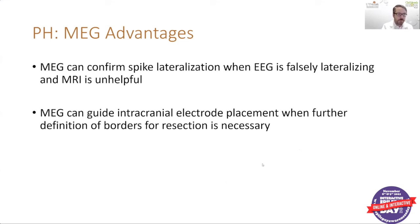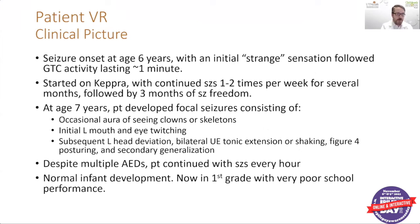Our second case is patient VR, who had seizure onset at six years of age, described as an initial strange sensation followed by generalized tonic-clonic activity, usually around one minute in duration. She was started on Keppra but continued to have one to two seizures per week for several months. Later, at age seven, she began having focal seizures with an aura of seeing clowns or skeletons, then left mouth and eye twitching, left head deviation, bilateral arm tonic extension, figure-4 posturing, and then generalization afterward.